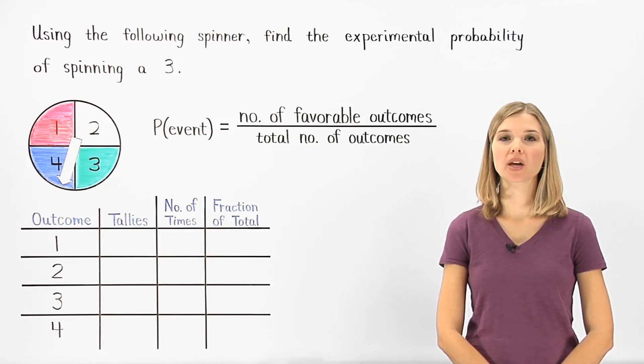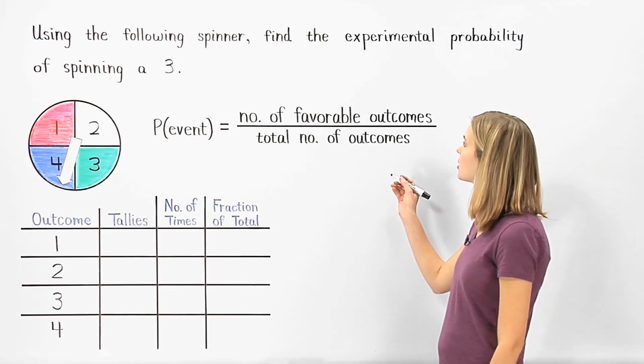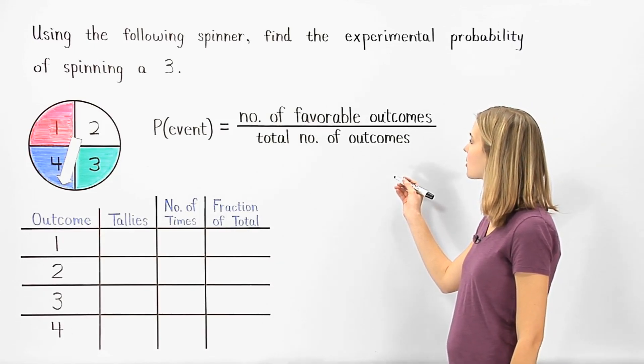In the previous lesson, we learned that we can find the probability of an event using the ratio number of favorable outcomes over total number of outcomes.